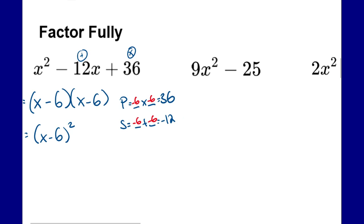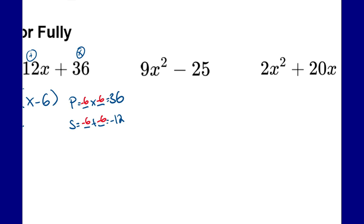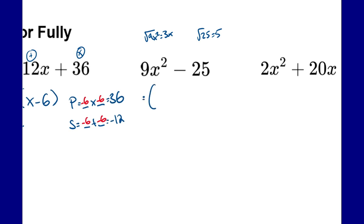The next one, 9x² minus 25, is a difference of squares. We recognize it because there are two terms, each a perfect square, separated by subtraction. The square root of 9x² is 3x and the square root of 25 is 5. The pattern for a difference of squares gives us two brackets with opposite signs: (3x minus 5)(3x plus 5).